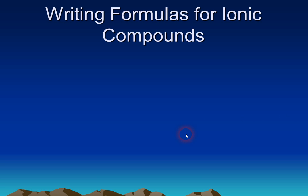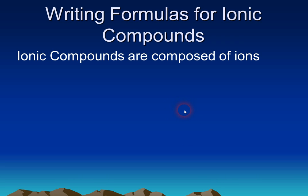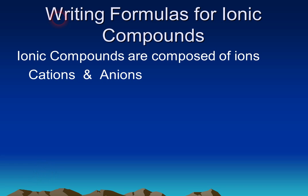Ionic compounds are composed of ions and there are two main types of ions. We have cations and we have anions. Cations have a positive charge whereas anions have a negative charge. These ions are held together by what's called electrostatic charge — basically the attraction of a positive to a negative is what holds these ionic compounds together.